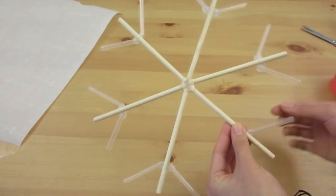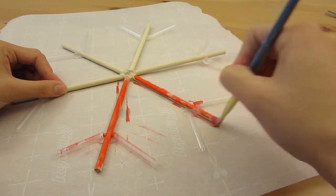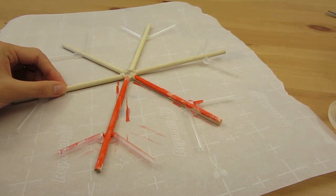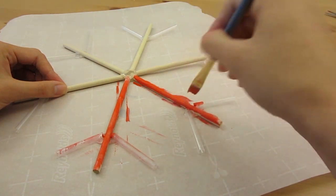I made another smaller snowflake because I think having only one on the wall will look too lonely. And I found out that it's much easier to paint on wood sticks than on straws.